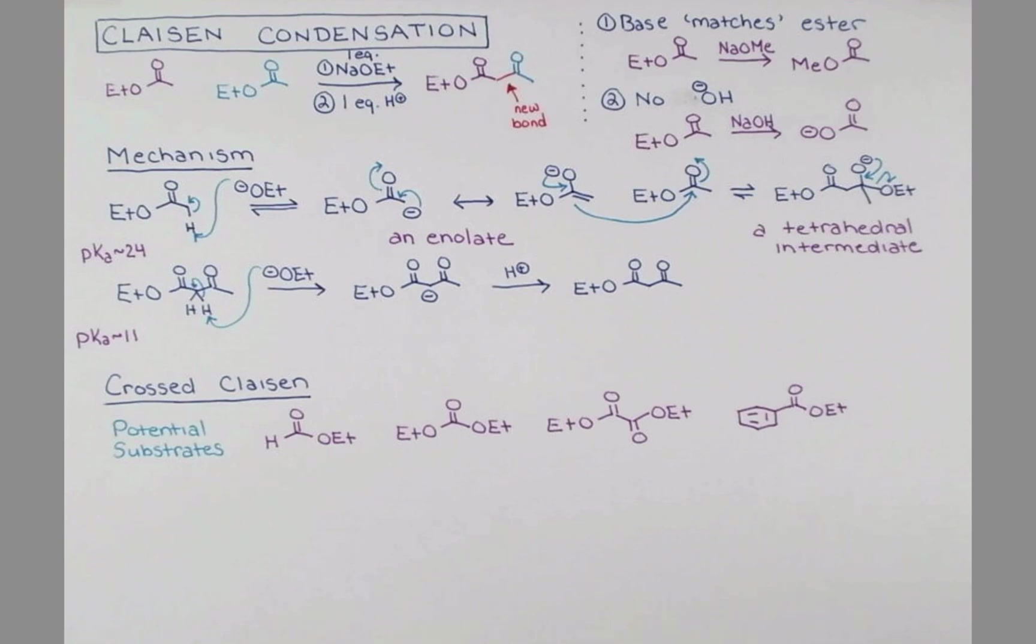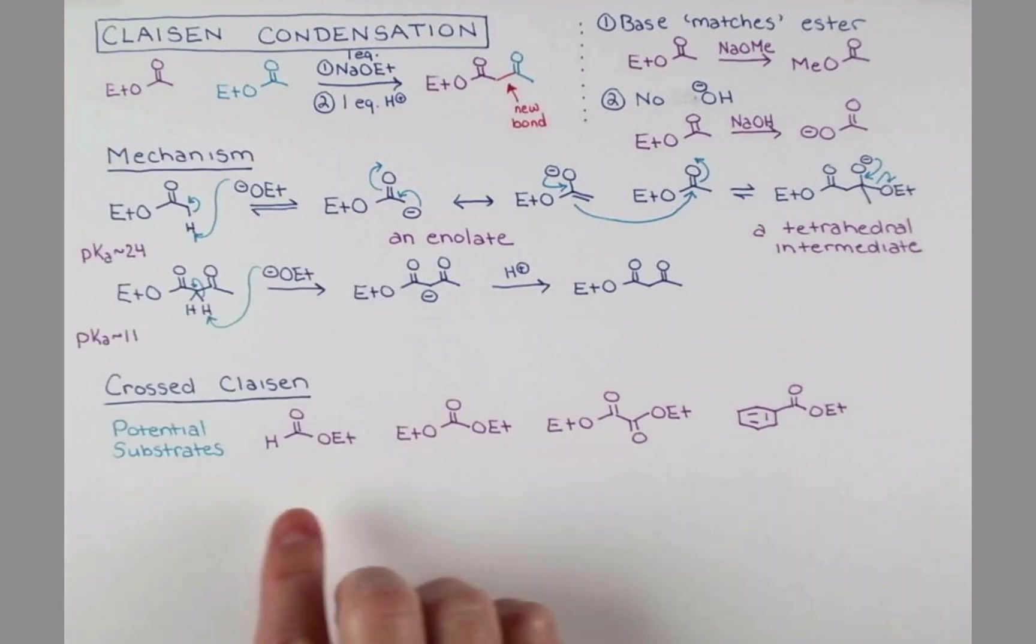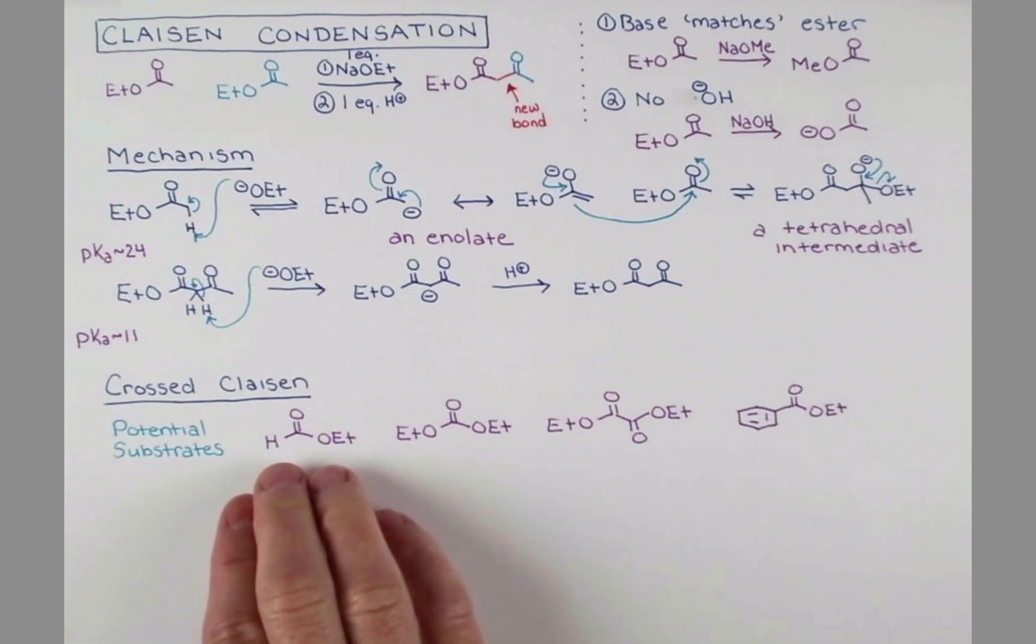So here are four potential substrates for the crossed Claisen reaction. Notice there are no hydrogen atoms alpha to the carbonyl group, and this one might be a little bit deceiving. Here we have this aldehyde-like hydrogen. Those are never acidic. Remember, we need to have a carbon adjacent, and it's the hydrogens on that carbon that are acidic.